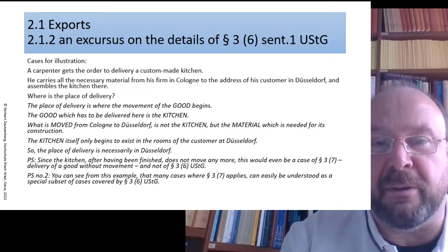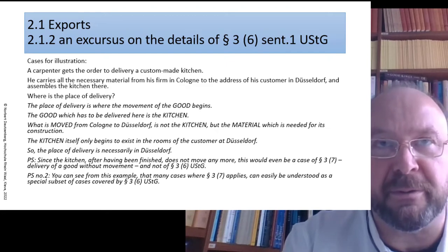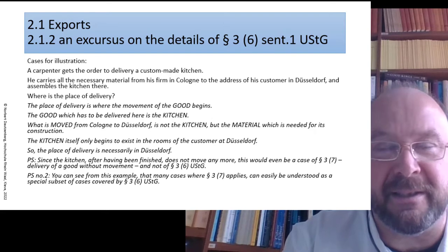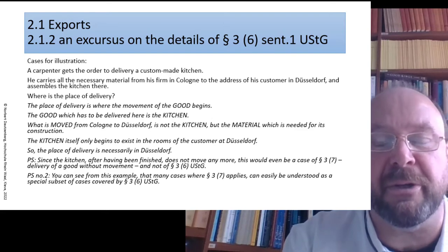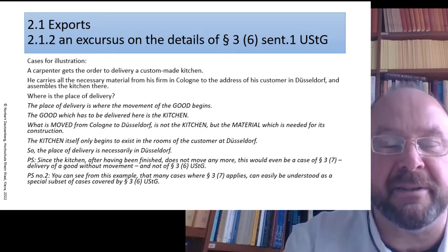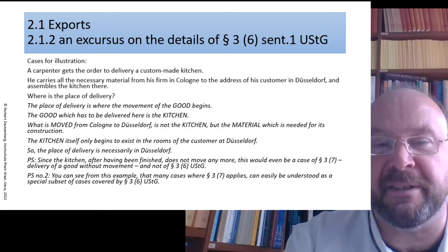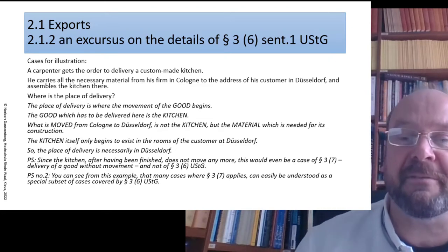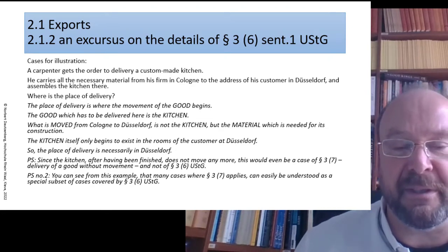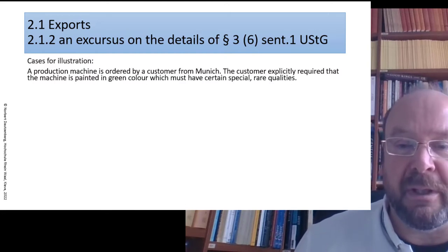This example shows that in many cases where you have a delivery without movement, you can easily identify that when you look to the earliest place where the movement can begin. The good only begins to exist in the rooms of the customer and there it stays, so we don't have any movement. So it's §3.7, not §3.6.